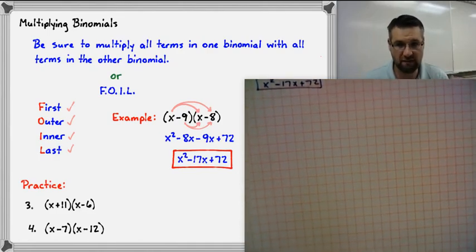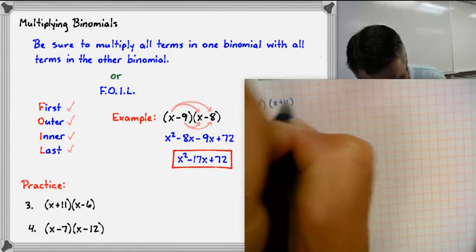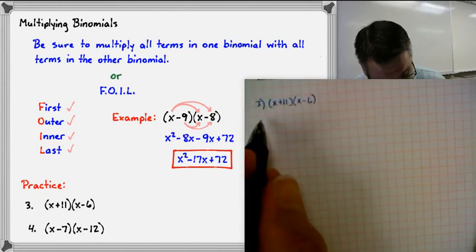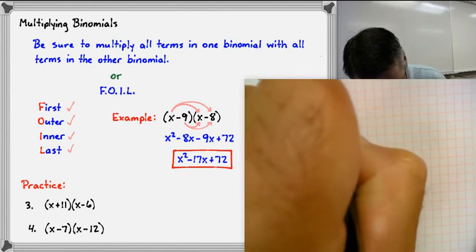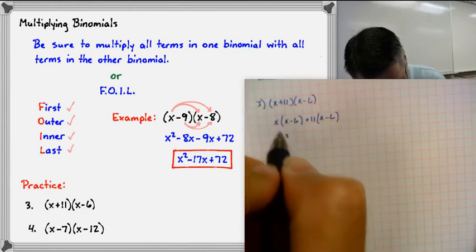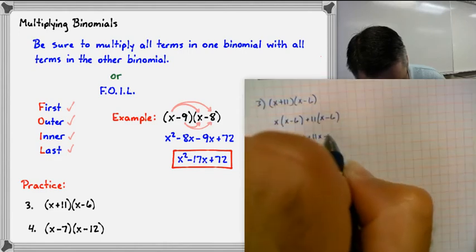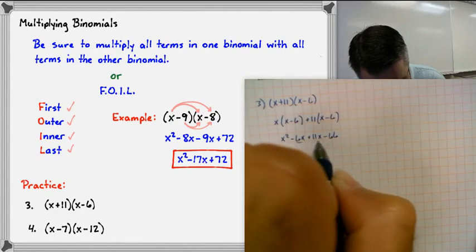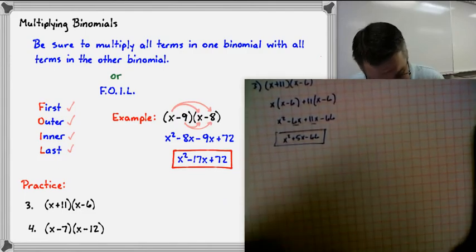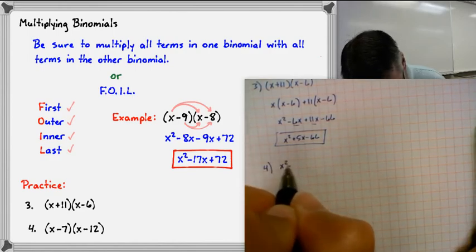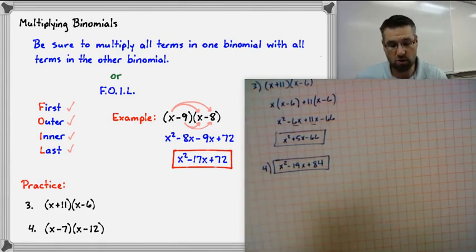Go ahead and put these practice problems on the left-hand side. For number three: (x plus 11) times (x minus 6). Rewrite as x times (x minus 6) plus 11 times (x minus 6). Distributing: x squared, negative 6x, plus 11x, and positive 11 times negative 6 is negative 66. Combining like terms: x squared plus 5x minus 66. For number four, the answer is x squared minus 19x plus 84.